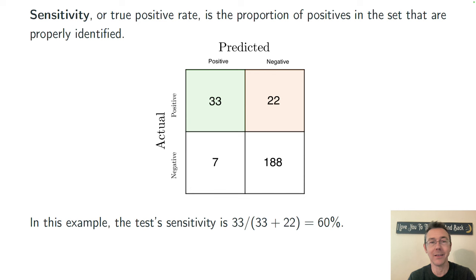So in this case, we're just looking at the top row in that confusion matrix. The actual positives. In this case, there's 55 actual positives and our algorithm is pulling out 33 of them. So we have a sensitivity of 60%.